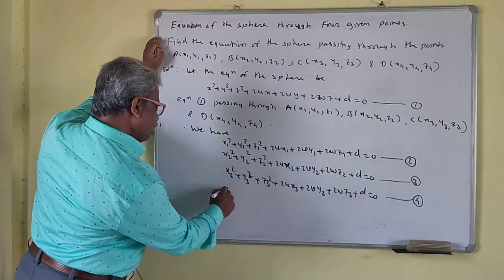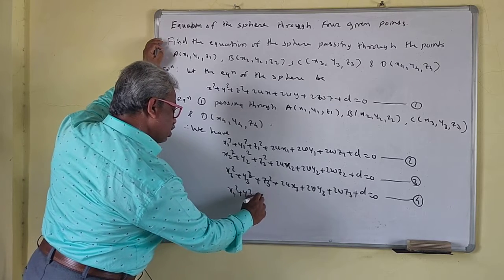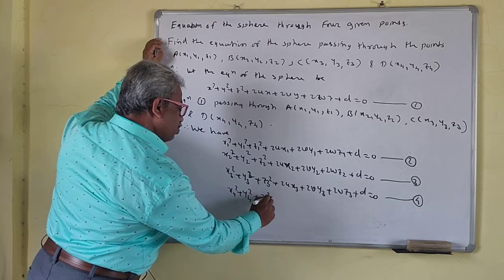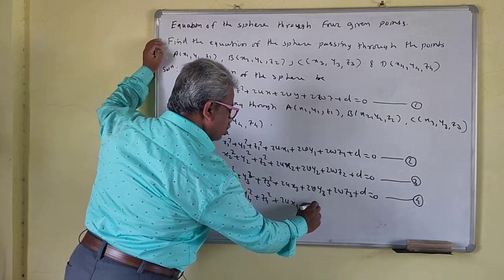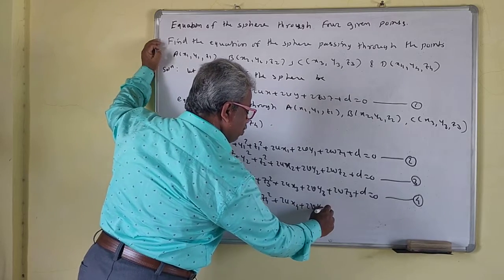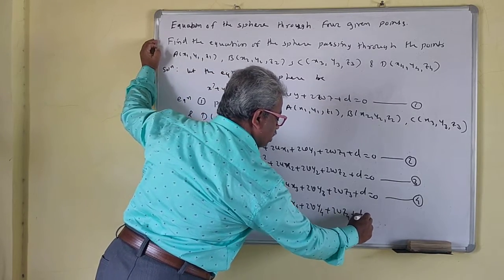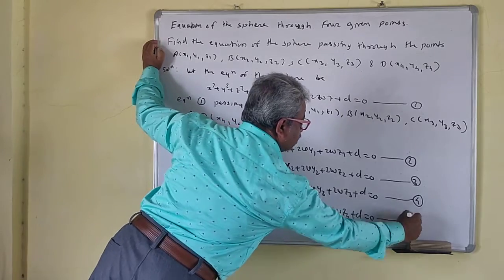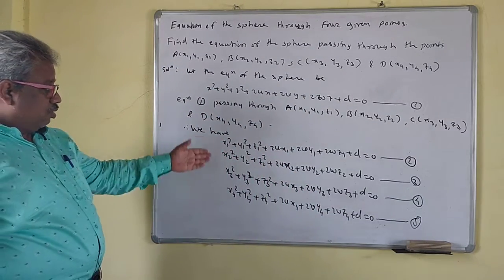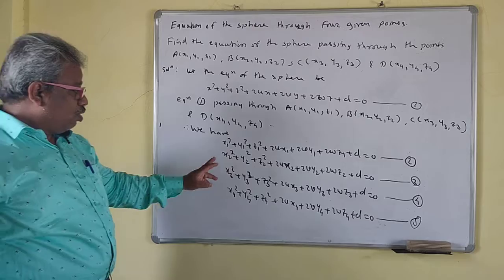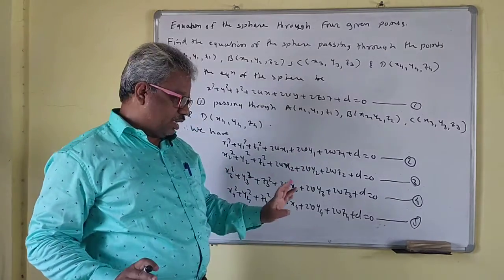And x₄² + y₄² + z₄² + 2ux₄ + 2vy₄ + 2wz₄ + d = 0 — we call this equation 5. So now we want the values of u, v, w, and d.